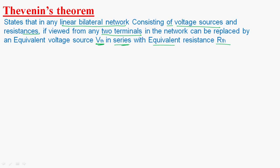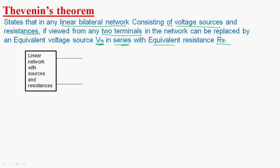Let us consider a circuit that is a linear network with sources and resistances. This block is having n number of voltage sources and n number of resistances. All these n number of voltage sources are replaced with a single voltage source VTH — that is Thevenin's voltage — in series with an equivalent resistance RTH.